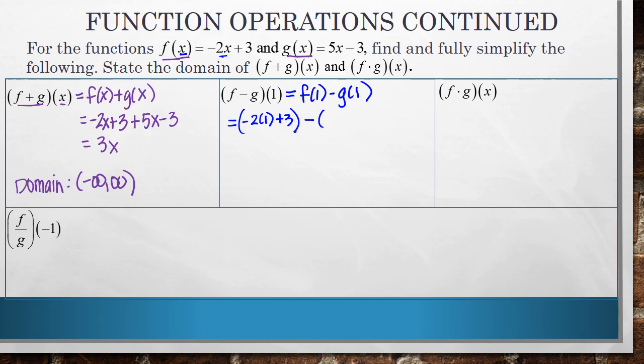And then I'm going to subtract g of 1, which is 5 times 1 minus 3. Make sure that you're writing these in parentheses because I'm not just subtracting the 5 times 1. I'm subtracting the entire quantity, g of 1.